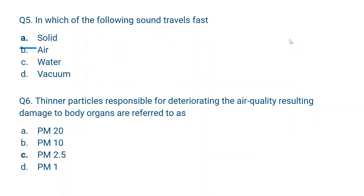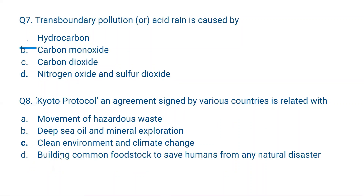Question number 6. Fine particles responsible for deteriorating air quality and resulting in damage to body organs are referred to as: A) PM 20, B) PM 10, C) PM 2.5, D) PM 1. Correct answer is PM 2.5. There are two types of particulate matter: PM 10, which are 10 microns or bigger, and PM 2.5, which are 2.5 microns or smaller. These fine particles accumulate inside the lungs and damage the alveoli.